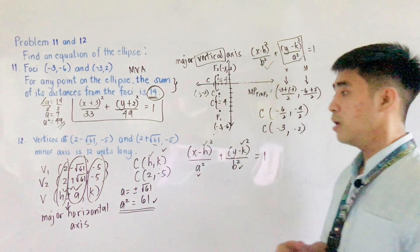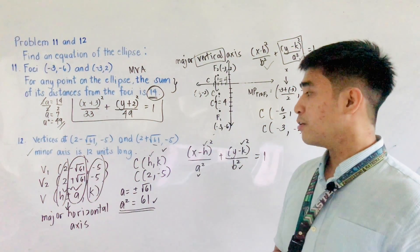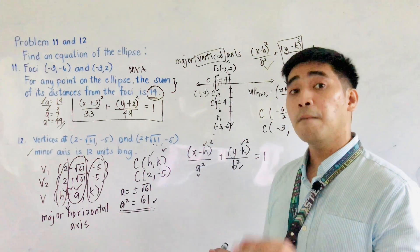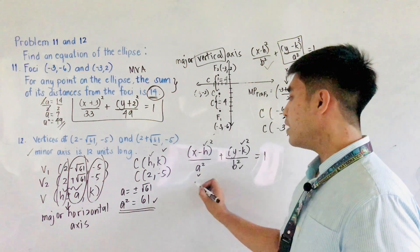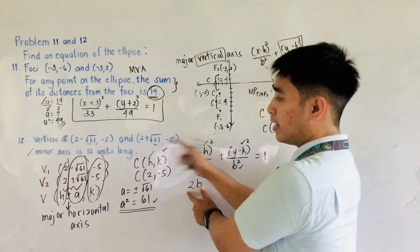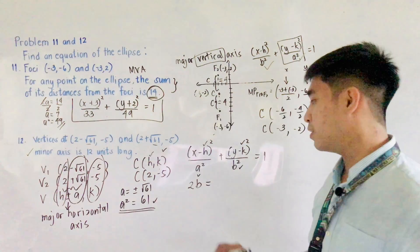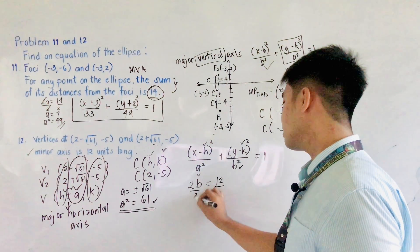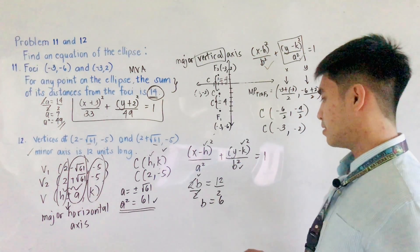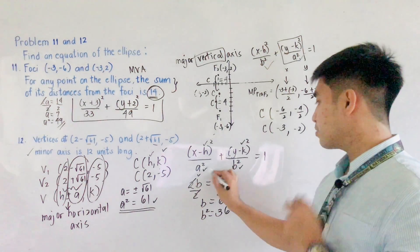How do we solve for B squared? We use the other condition: the minor axis is 12 units long. The length of the minor axis is always 2B. So 2B equals 12, divide both sides by 2, and B equals 6. Therefore, B squared equals 36. We now have both A squared and B squared.